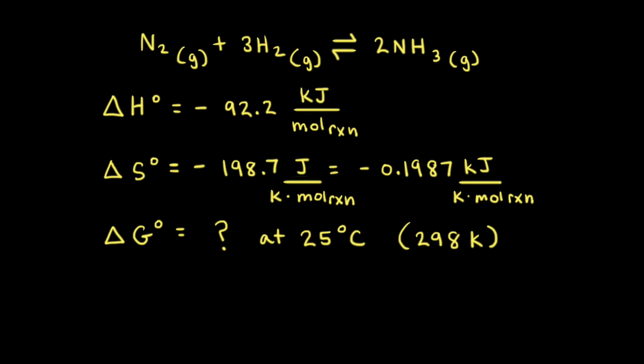Let's do a worked example where we calculate the standard change in free energy, ΔG⁰, for a chemical reaction. We'll look at the synthesis of ammonia gas from nitrogen gas and hydrogen gas. At 25 degrees Celsius, ΔH⁰ for this reaction is equal to negative 92.2 kilojoules per mole of reaction, which means the reaction is exothermic. And ΔS⁰ for this reaction is equal to negative 198.7 joules per Kelvin mole of reaction.